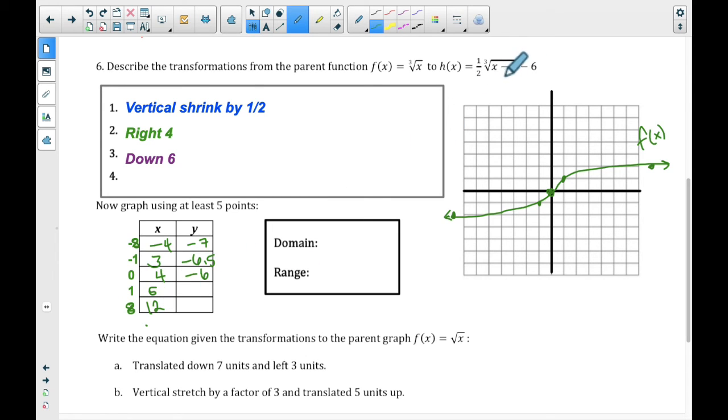Plug in a 5, that is 1, half of 1 is half, minus 6 is negative 5.5. Plug in a 12, we get 8, cube root of 8 is 2, half of 2 is 1, 1 minus 6 is negative 5. Okay, so now we are going to plot these points on our graph. Take a second to do that.